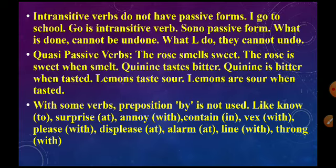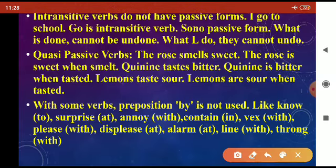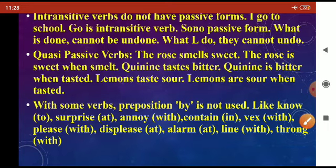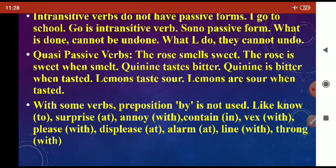Transitive verbs form passive voice, but intransitive verbs do not have a passive form. For example, 'I go to school' — 'go' is an intransitive verb, so there is no passive form. Some verbs describe sensory qualities: 'The rose smells sweet' becomes 'The rose is sweet when smelt'; 'Quinine tastes bitter' becomes 'Quinine is bitter when tasted'; 'Lemons taste sour' becomes 'Lemons are sour when tasted.' With certain verbs, the preposition 'by' is not used — for example: 'surprise at,' 'annoy with,' 'contain in,' 'please with,' 'displease at,' 'alarm' — these use their own prepositions instead of 'by.'